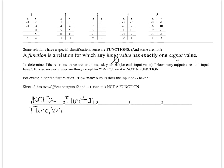For table three, zero has output value three, five has output value three, two has output value three. All output values are three, but it doesn't matter — every single input value is unique and has exactly one output, so this one is also a function. For table four, negative five appears twice with two different output values, so negative five has two different outputs, which means this one is not a function.